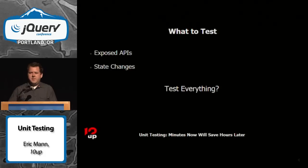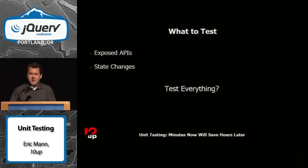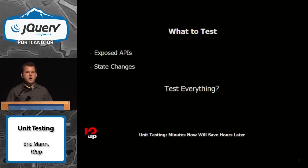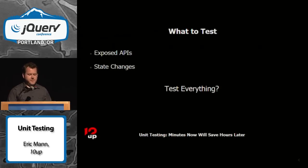But what do you want to test? A lot of people when they first start writing unit tests want to test everything. The answer is: no, you don't test everything. You just test the API you're exposing for other consumers to use — basically, any part of your codebase that another codebase has to talk to.